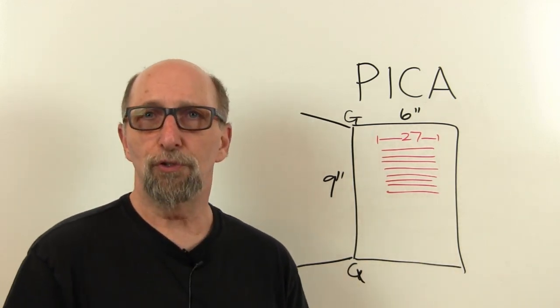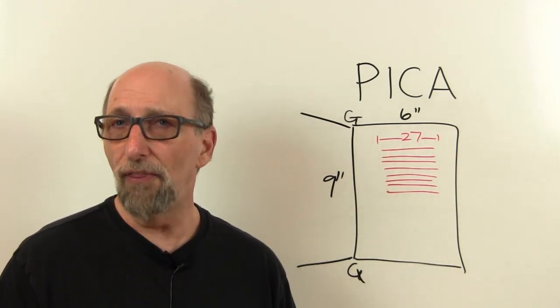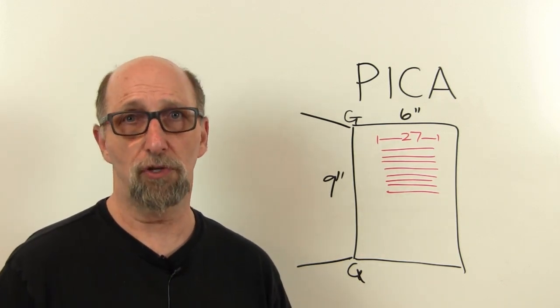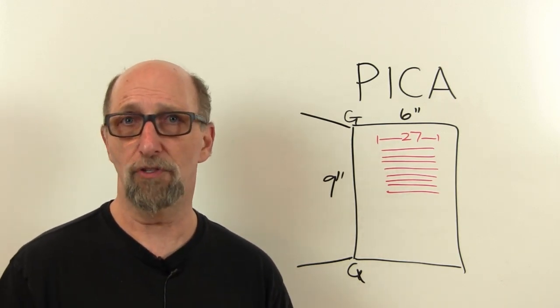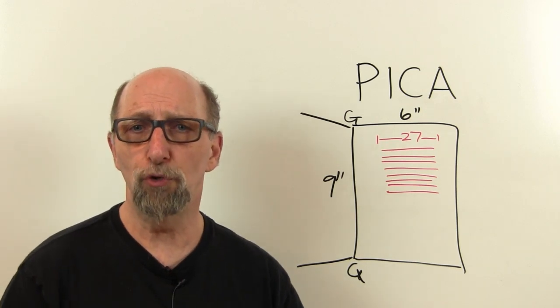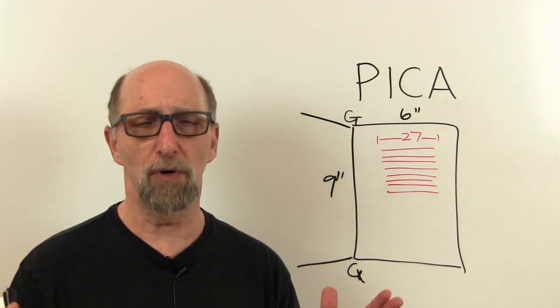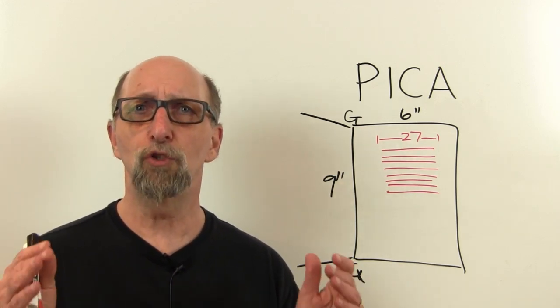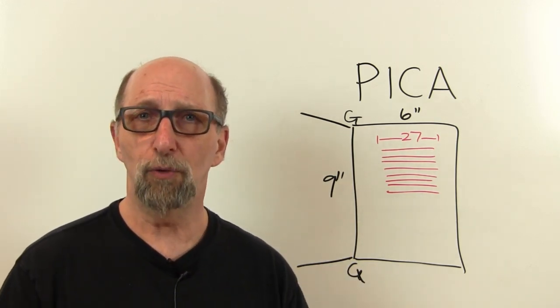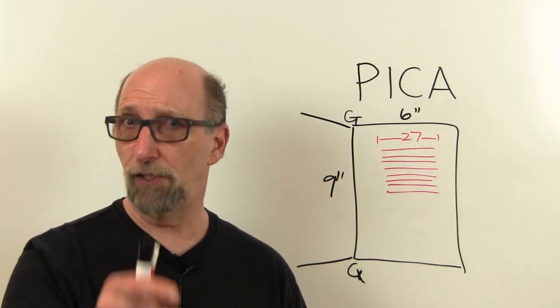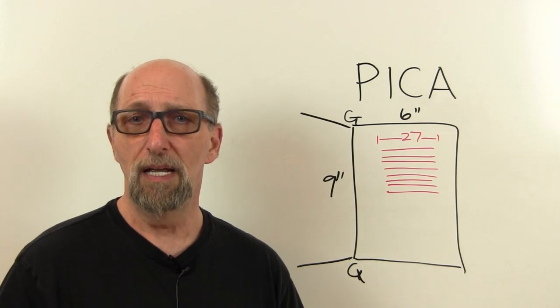Now suppose we were still using inches. That wouldn't be too hard—27 Picas happens to be exactly four and a half inches, so that's pretty easy. You could measure four and a half inches, no problem. But suppose you wanted to make that line a little smaller. Maybe you're a designer and you say, 'It's just a little crowded, I want to make it shorter. I want to make it 26 Picas.' 26 Picas on your ruler is four and a third inches. That's pretty hard to measure with your ruler.